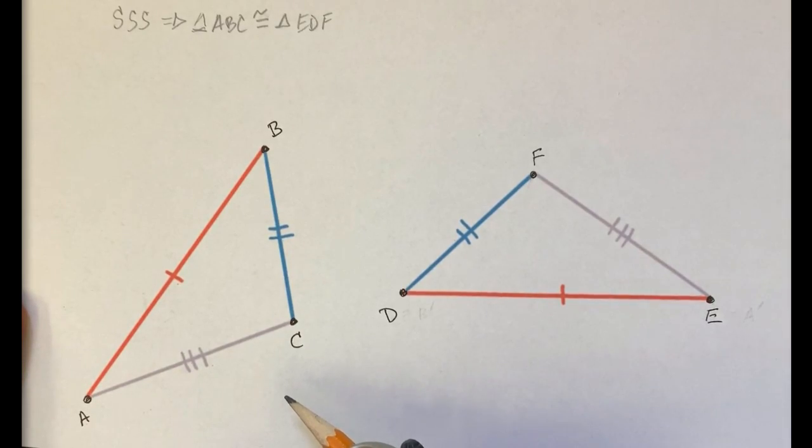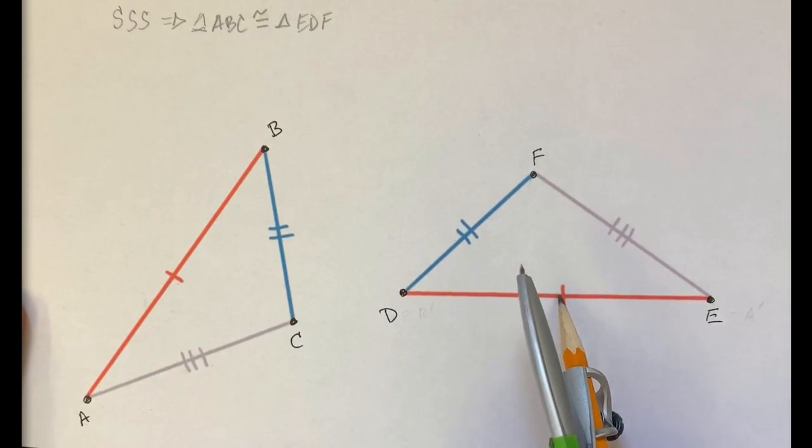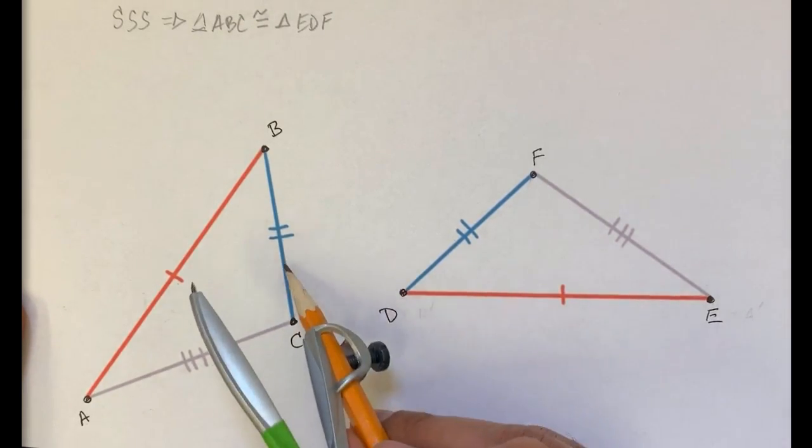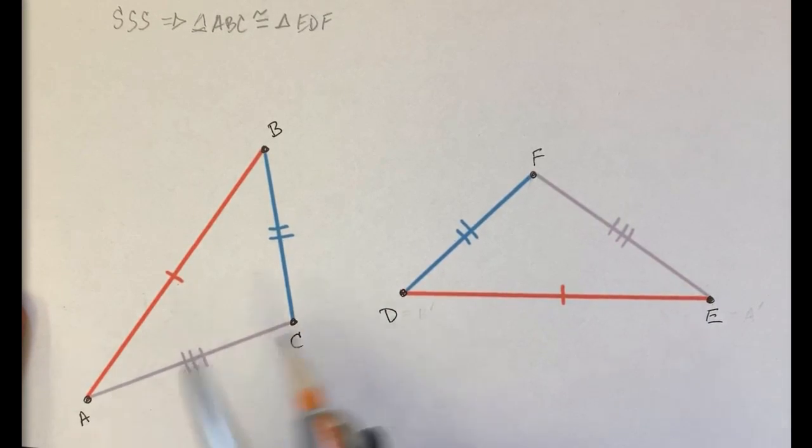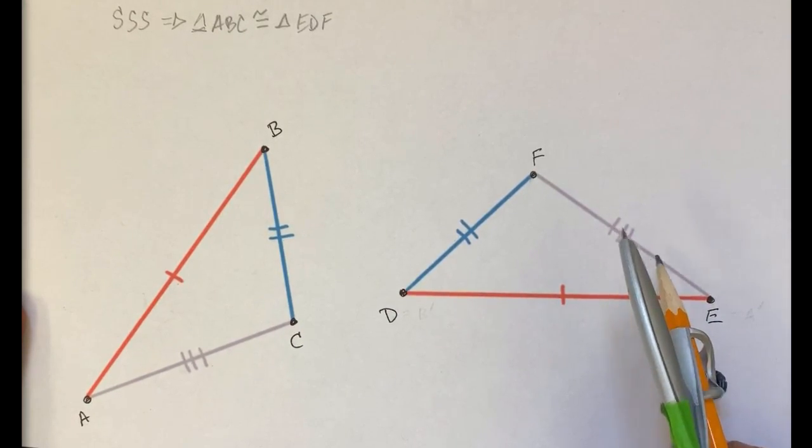What we're going to do in this video is see that if we have two different triangles where the corresponding sides have the same measure, so this orange side has the same length as this orange side, this blue side has the same length as this blue side, this gray side has the same length as this gray side.